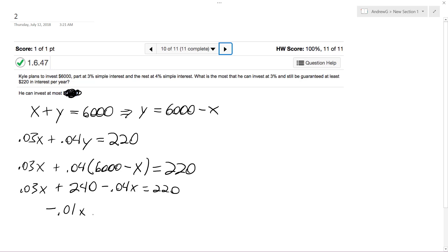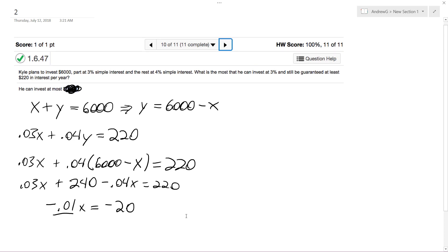And then subtract 240 on the other side, I get negative 20. And if you divide through, negative 20 divided by negative 0.01 is equal to $2,000. So the minimum amount, the most you can invest at 3%...